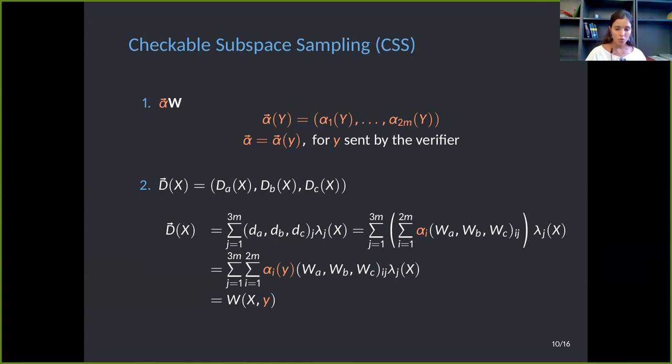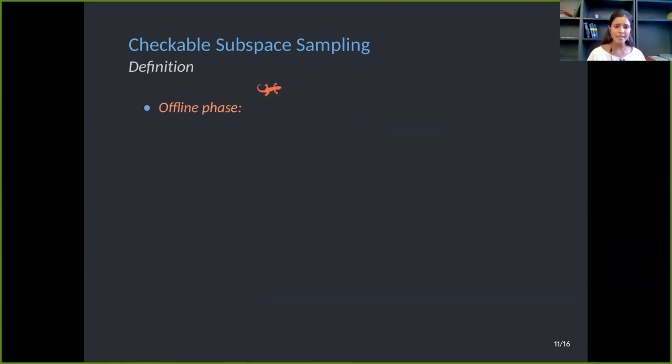So to prove circuit satisfiability, we will start from a checkable subspace sampling. It has the structure of an algebraic holographic proof. And then we add the inner product relation in order to prove the linear constraints. And then we add the Hadamard product relation in order to finally prove circuit satisfiability. So this is how we break the information theoretical object. But for time constraints, I'm going to focus only on the first primitive, the checkable subspace sampling, which is our main contribution.